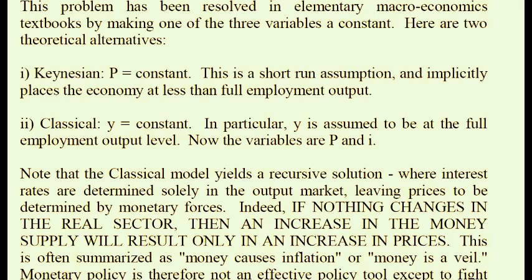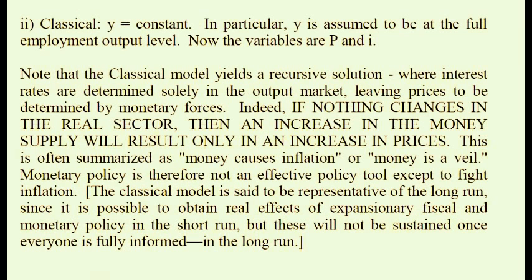The classical model yields a recursive solution where interest rates are determined solely in the output market, leaving prices to be determined by monetary forces. If nothing changes in the real sector, an increase in the money supply will result only in an increase in prices — often summarized as 'money causes inflation' or 'money is a veil.' Monetary policy is therefore not an effective policy tool for the classicists except to fight inflation. The classical model represents the long run, since real effects of expansionary policy are possible in the short run but not sustained once everyone is fully informed.